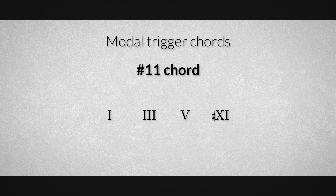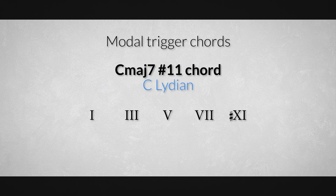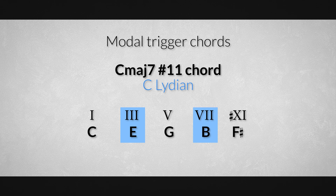Another great example is the sharp 11 chord, which is specific for the Lydian mode. The C major seventh sharp 11 chord is constructed out of the root C, a major third E, a perfect fifth G, a major seventh B, and a sharp 11th F sharp. All these notes outline the C Lydian mode perfectly — the major third in combination with the major seventh, and in particular the modal trigger note F sharp, the raised fourth degree, are the most important notes of the Lydian mode.